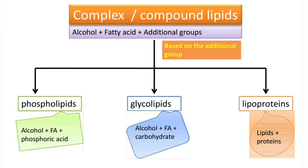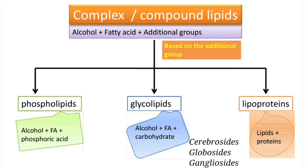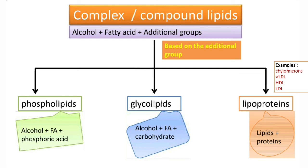Phospholipids contain alcohol plus fatty acids plus phosphoric acid as the additional group. Glycolipids — the name indicates glyco, meaning carbohydrates — contain alcohol plus fatty acids plus carbohydrates as the additional group. Lipoproteins are lipids plus proteins. Examples: phospholipids include cephalin, lecithin, and sphingomyelin. Glycolipids include cerebrosides, globosides, and gangliosides. Lipoproteins include HDL, LDL, VLDL, and chylomicrons.